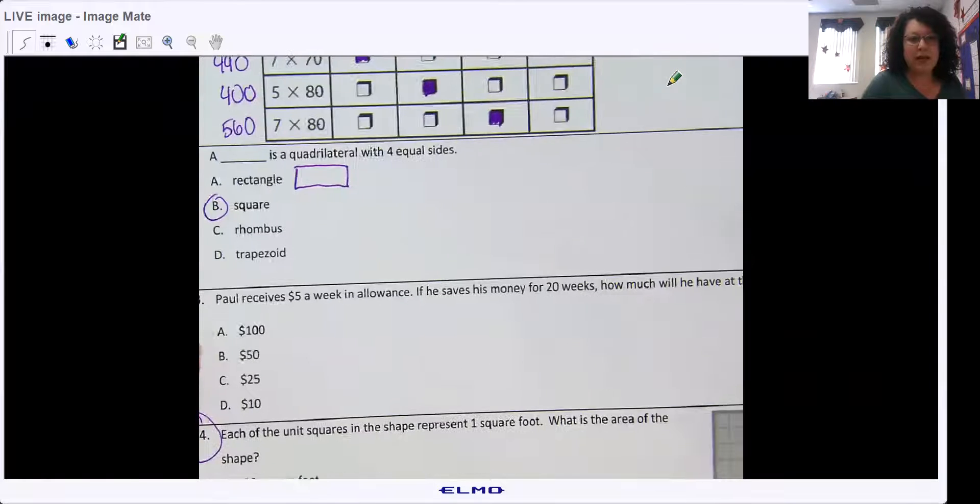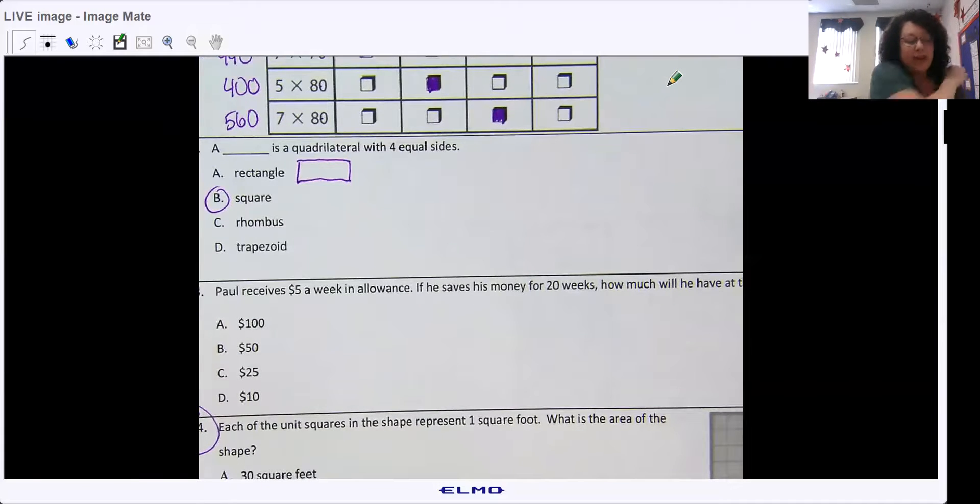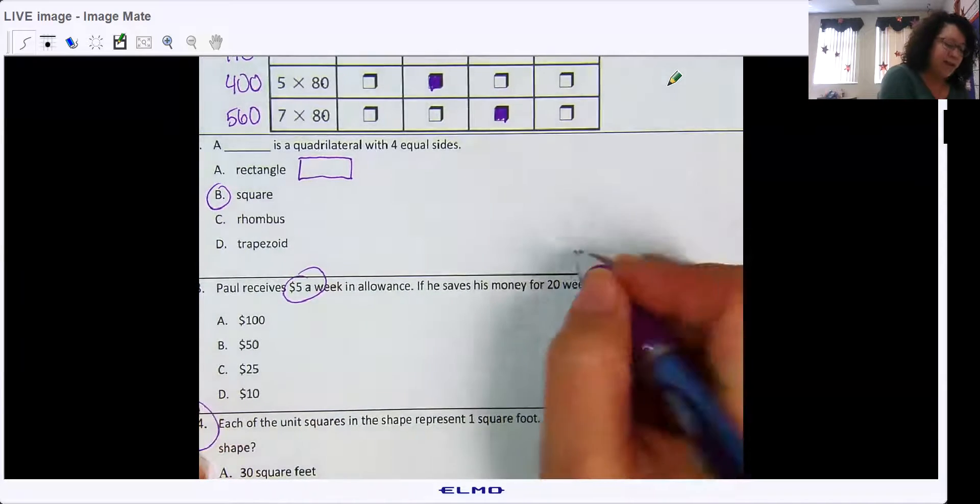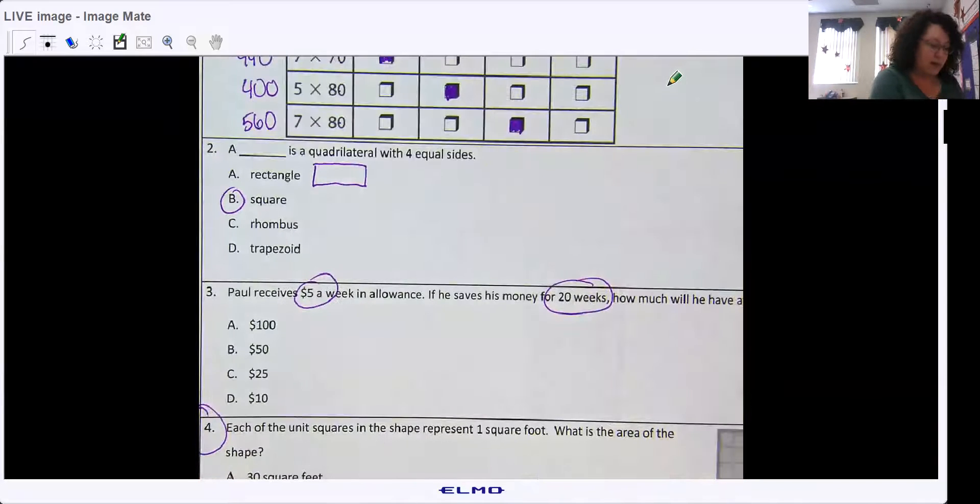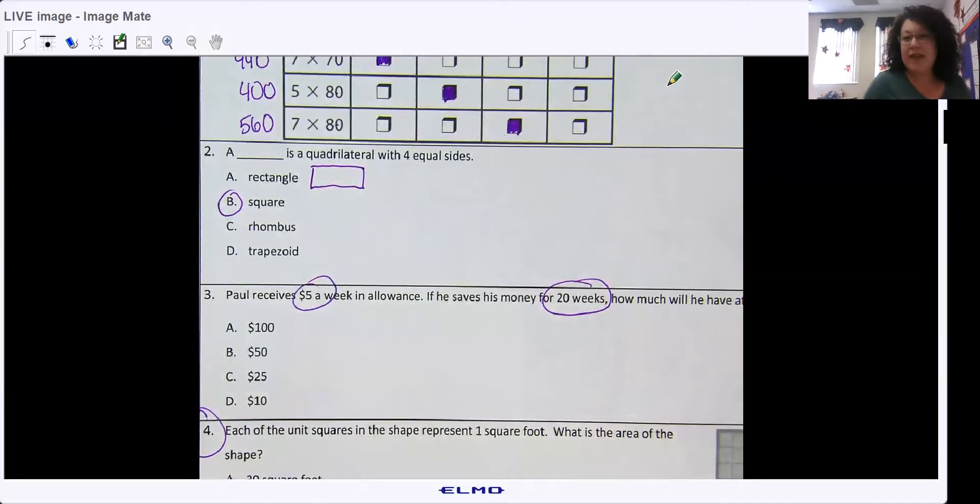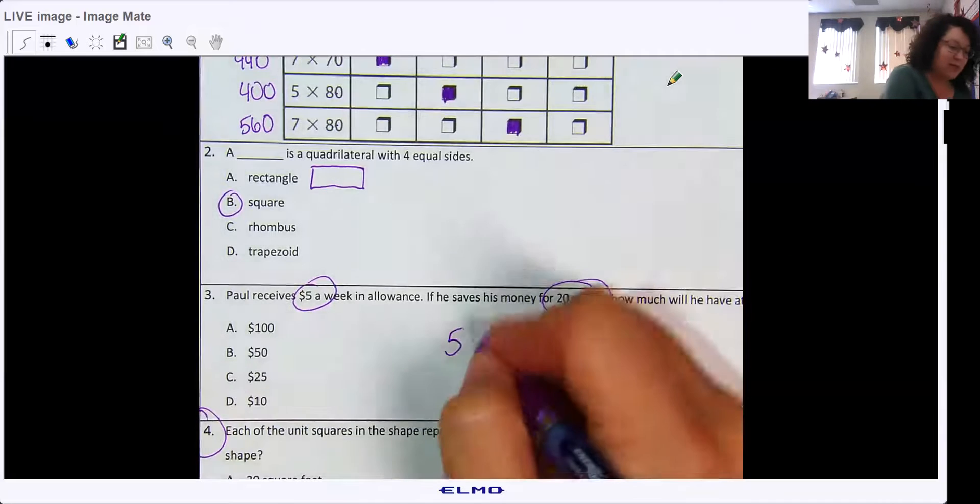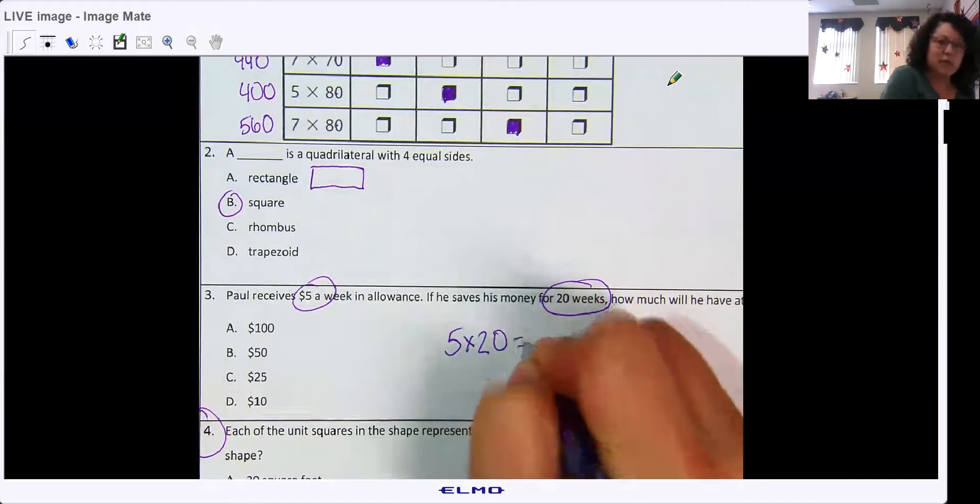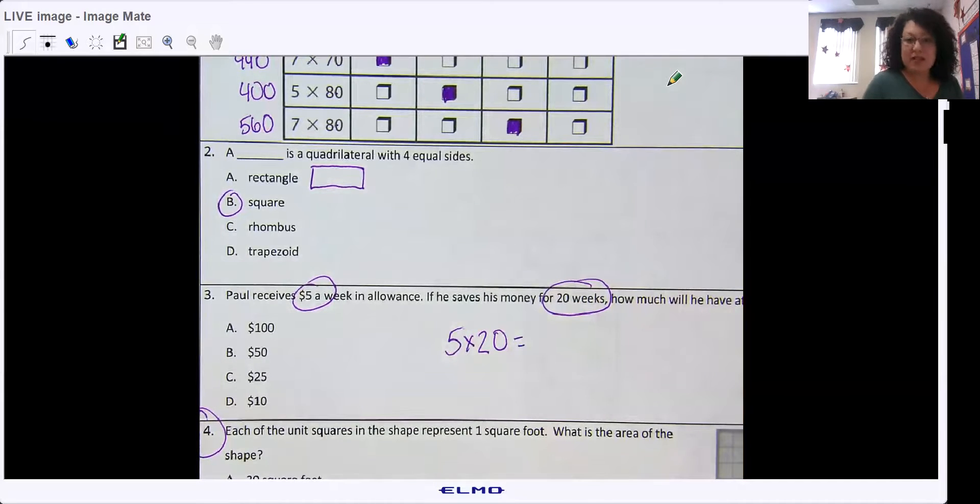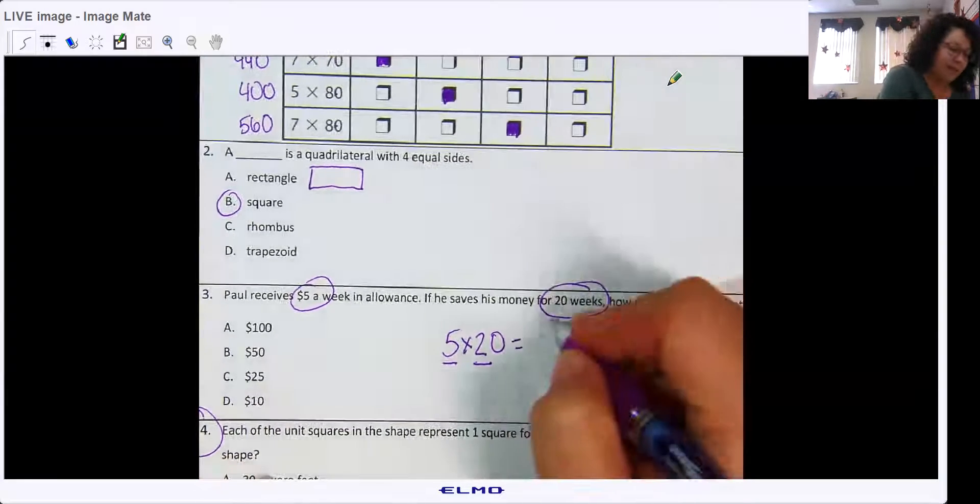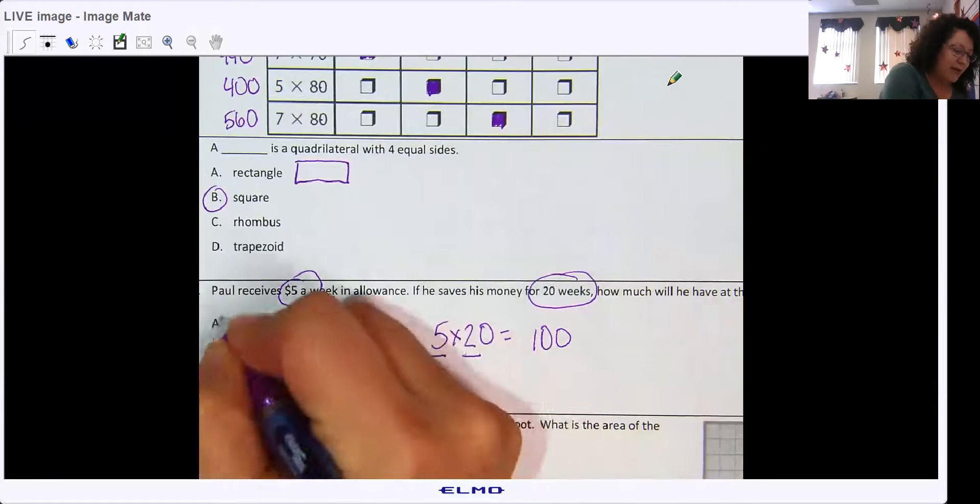Number three, Paul receives $5 a week in allowance. If he saves his money for 20 weeks, how much will he have at the end? Pretty easy. $5 a week for 20 weeks. So we know we are multiplying by 20 weeks. And what we just did before, right? Add the zero. Five times two is 10, add my zero. A hundred bucks.